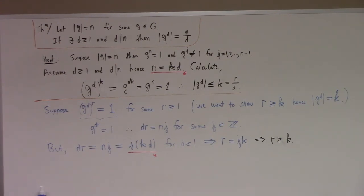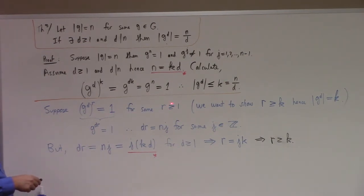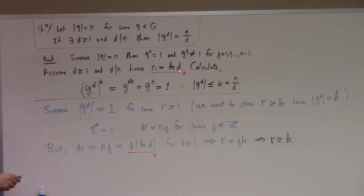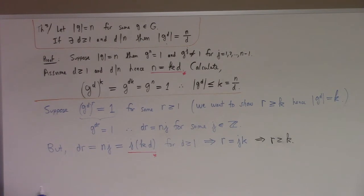To show the order can't be less than N over D: suppose G to the D to the R equals one for some positive R. Then G to the DR equals one, so by the theorem proved carefully in class, DR must be a multiple of N, say DR equals NJ. But N is KD, so substituting gives DR equals KDJ. Cancel the D: R equals JK. Since J and K are positive integers, this tells us R must be greater than or equal to K, which finishes the proof.